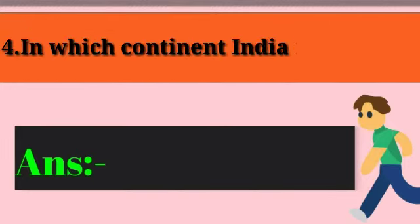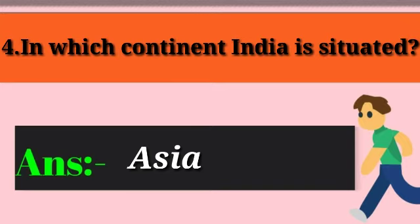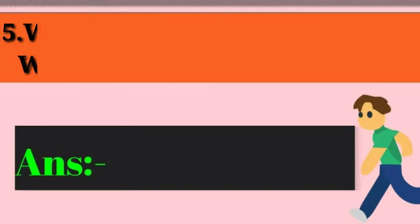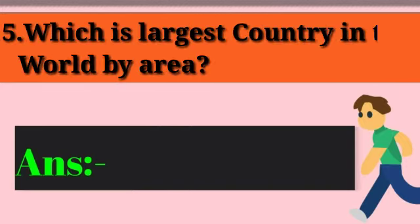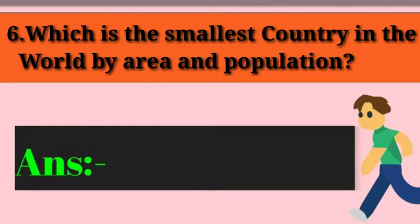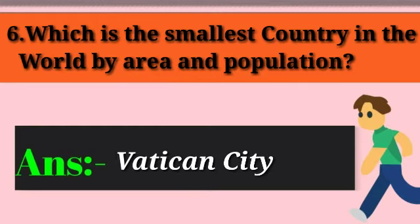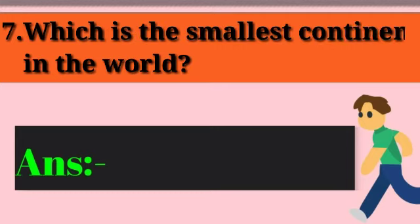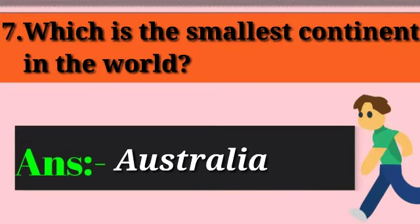Question 4: In which continent is India situated? Answer: Asia. Question 5: Which is the largest country in the world by area? Answer: Russia. Question 6: Which is the smallest country in the world by area and population? Answer: Vatican City. Question 7: Which is the smallest continent in the world? Answer: Australia.